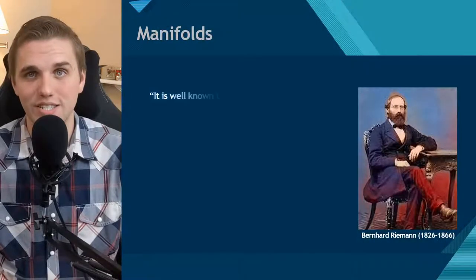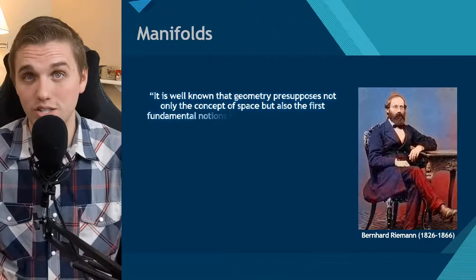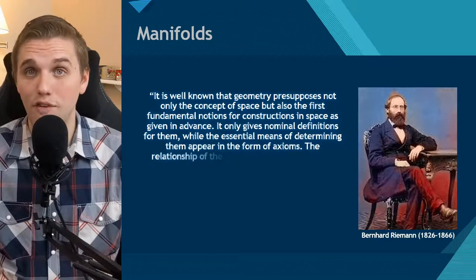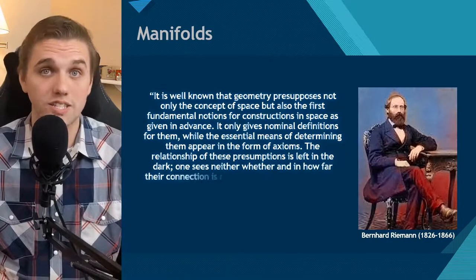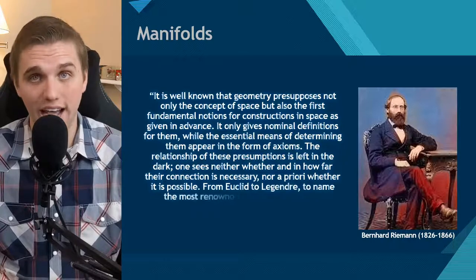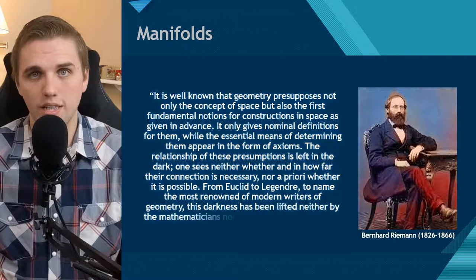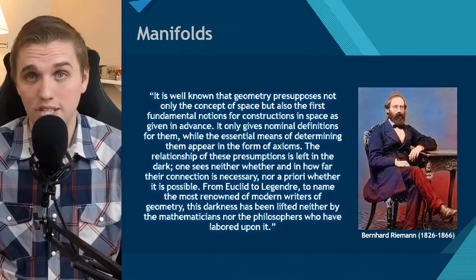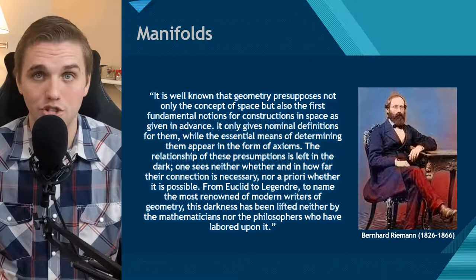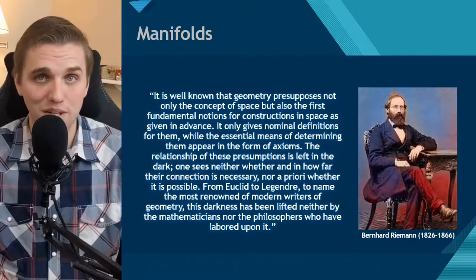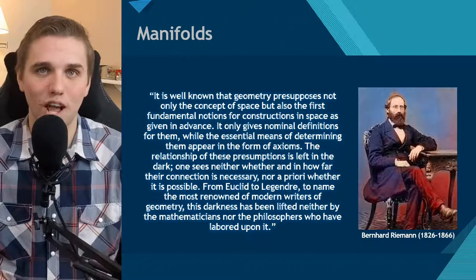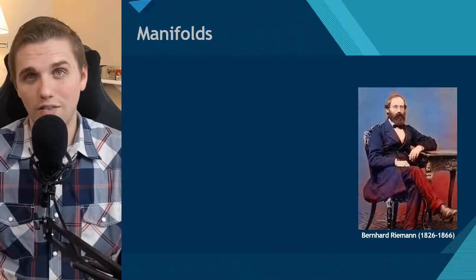One of the greatest quotes from Riemann is this: 'It is well known that geometry presupposes not only the concept of space, but also the first fundamental notions for constructions in space, as given in advance. It only gives nominal definitions for them, while the essential means of determining them appear in the form of axioms. The relationship of these presumptions is left in the dark. One sees neither whether and in how far the connection is necessary, nor a priori whether it is possible. From Euclid to Legendre, this darkness has been lifted neither by the mathematicians nor the philosophers who have labored upon it.' So this crisis in mathematics was an existential crisis for Riemann and many mathematicians. Riemann was never lucky enough to see the formalization of set theory, but his contributions were certainly crucial in its development.